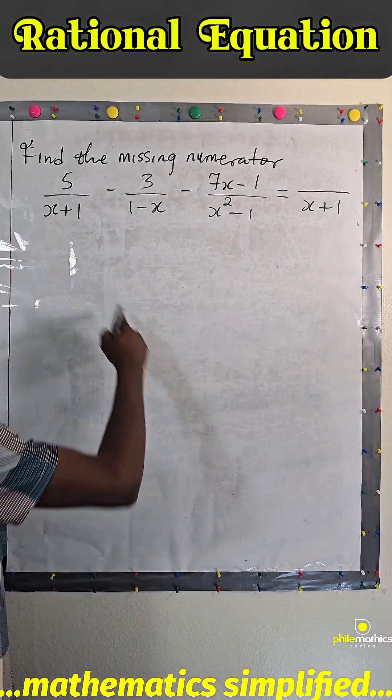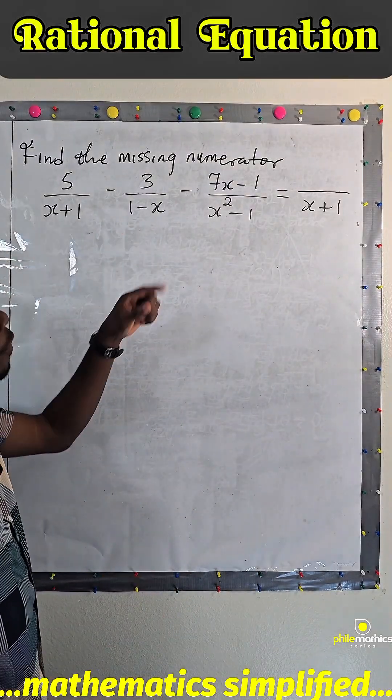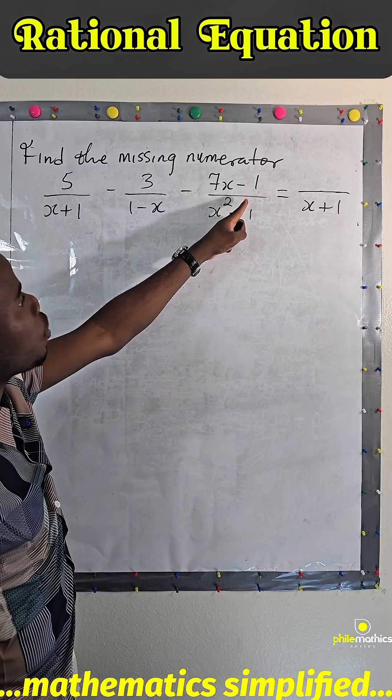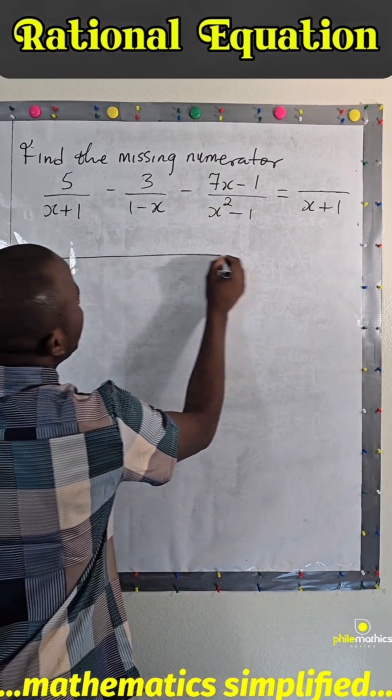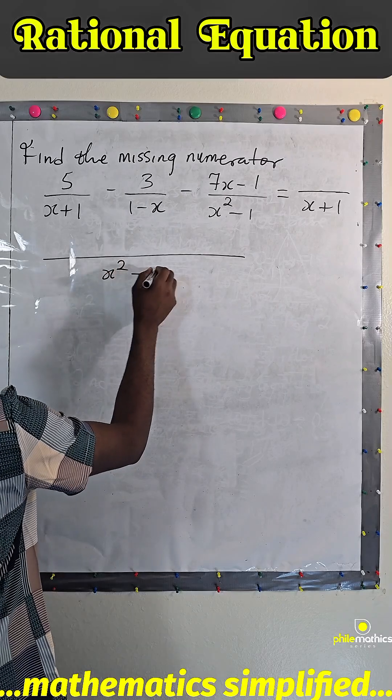So for us to do this, the LCM for the denominator is s² - 1, because this two is difference of two squares, it is same as this, and so the LCM is s² - 1.